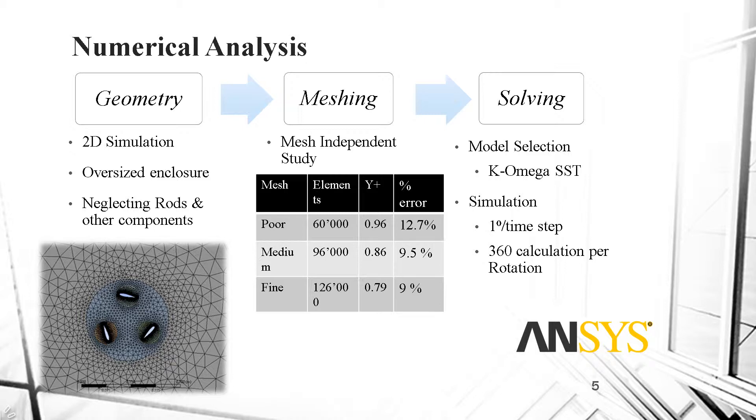When it comes to meshing, a mesh independent study has been performed in order to make sure that the results of our simulations are independent of the mesh quality. Three types of meshes have been performed, starting from poor to medium and ending with a fine mesh. It turned out that the error difference between the medium and fine meshes is negligible compared to the time it would take when running the fine mesh. So the medium mesh was adopted.